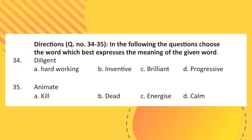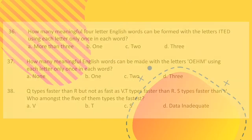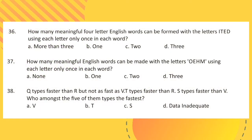Directions for questions 34 and 35: In the following questions, choose the word which best expresses the meaning of the given word. Question 36: How many meaningful 4-letter English words can be formed with the letters I, T, E, D, using each letter only once in one word?